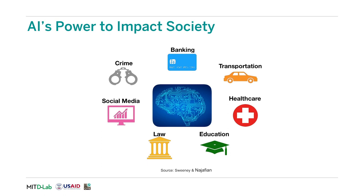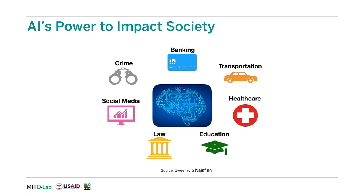AI has the power to impact society in a vast number of ways. For example, in the banking industry, many companies are trying to use machine learning to figure out if someone will default on a loan given data about them. Because machine learning is used in high-stakes applications, areas that cause it to be unfair could cause discrimination, preventing certain demographic groups from gaining access to fair loans.